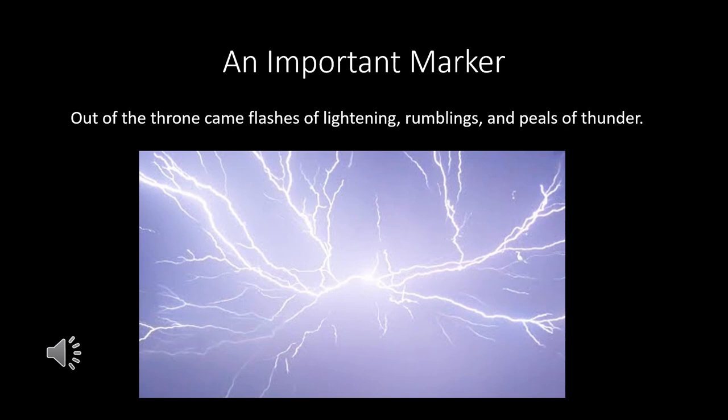There's an important marker in verse 5: 'Out of the throne came flashes of lightning, rumblings, and peals of thunder.' Throughout Revelation we're going to see this phrase repeated, but the further we go, something will be added — sometimes an earthquake, then hailstones, then huge hailstones. The further we go in Revelation, the more intense this marker becomes, telling us we're at an important place in the story.